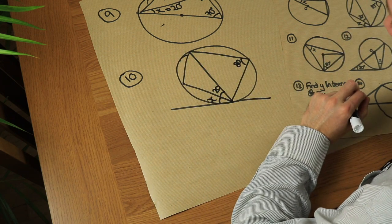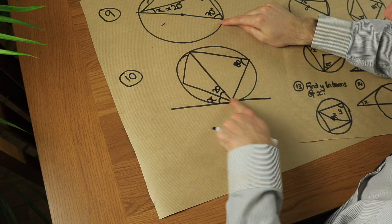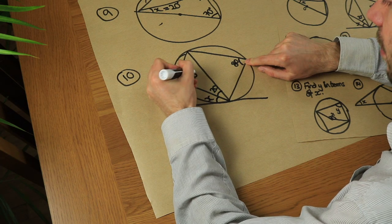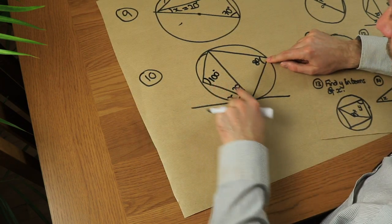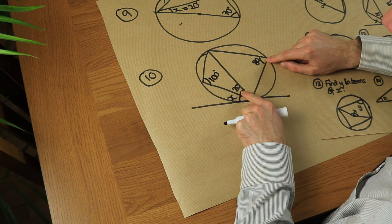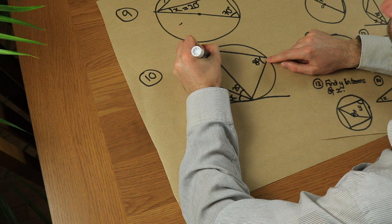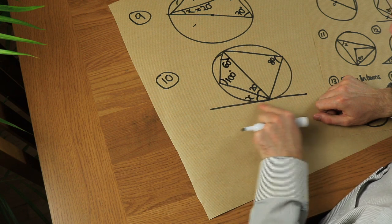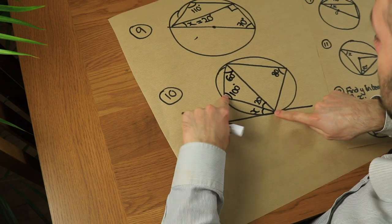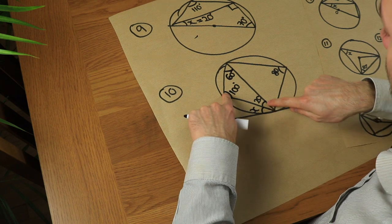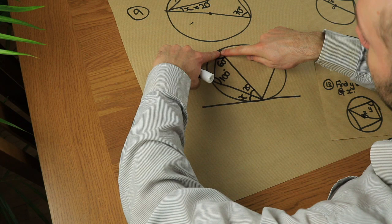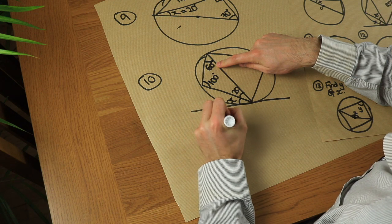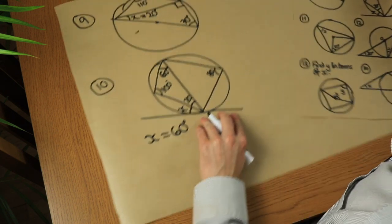For question ten, we have a tangent and chords, so we'll use the alternate segment theorem. First, this is a cyclic quadrilateral: opposite angles add to 180, so opposite to 80 is 100 degrees. In the triangle, 100 plus 20 gives 120, so the remaining angle is 60 degrees. By the alternate segment theorem, the angle between the tangent and the chord equals the angle in the alternate segment, so x equals 60 degrees.